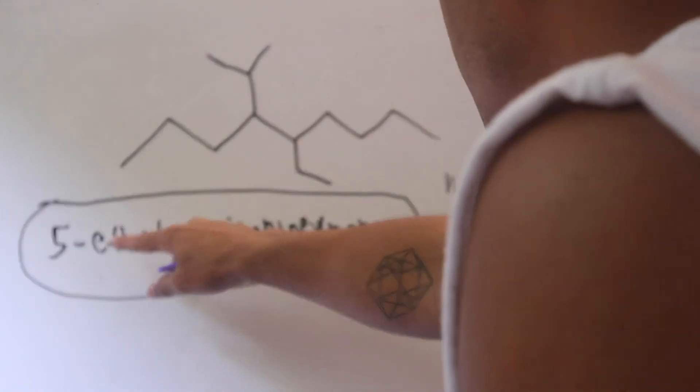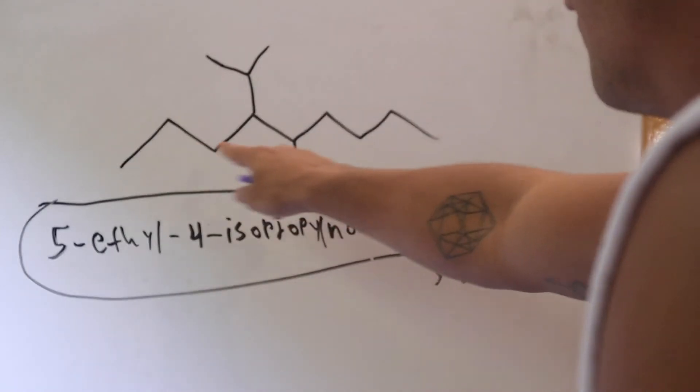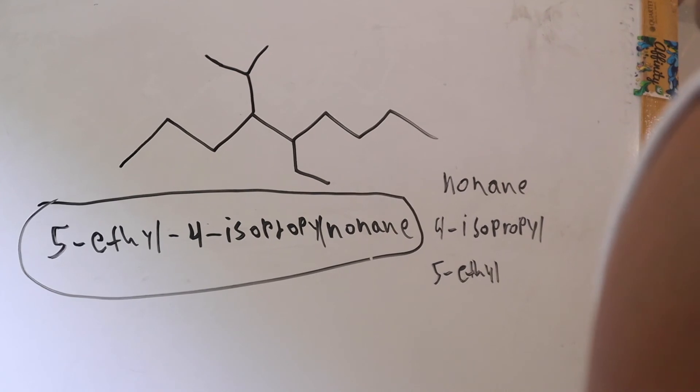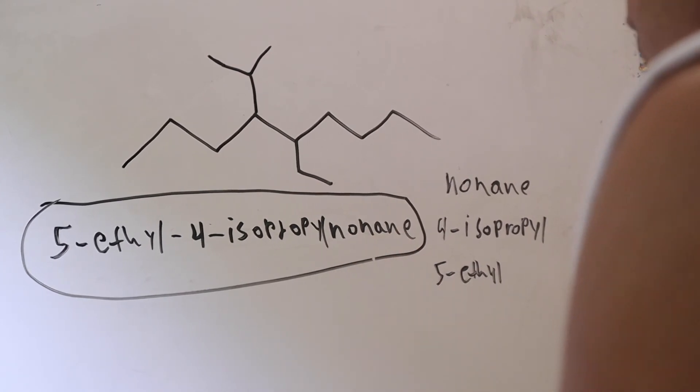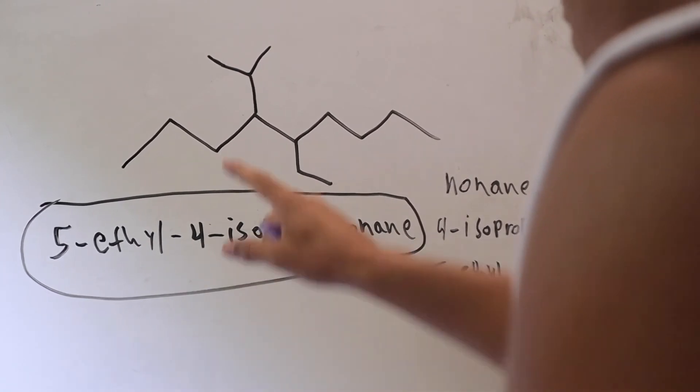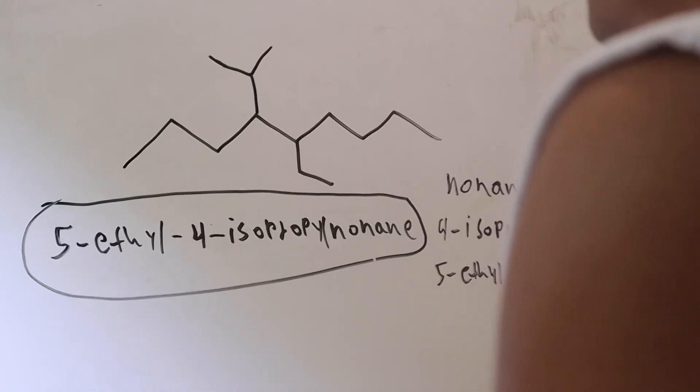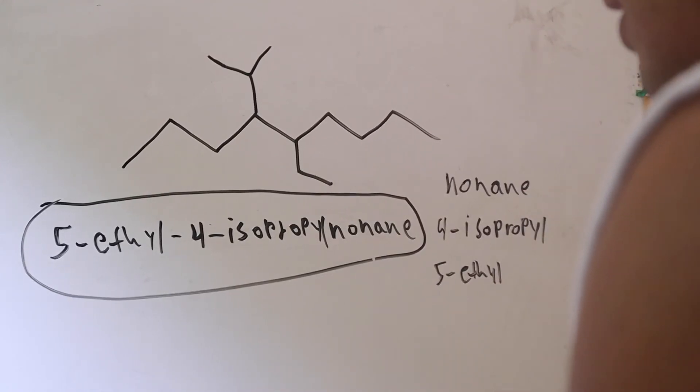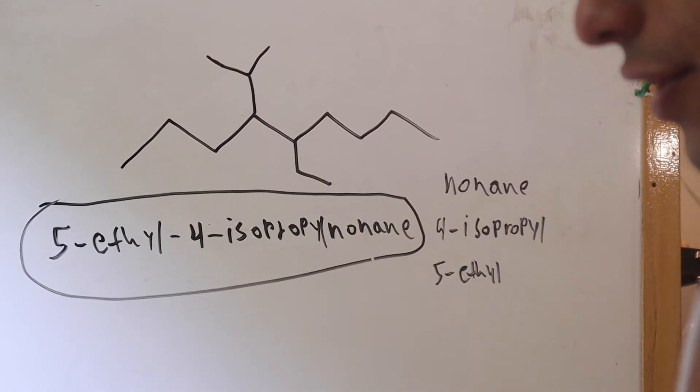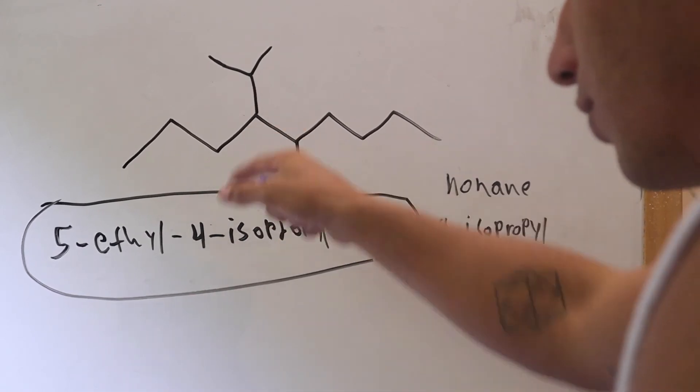And same thing here, you designate, even though 1, 2, 3, 4, 5, even though this ethyl group is on the fifth, no matter what, like I said, you want to designate the first functional group you see with the lowest number from either the right to the left, whatever will give you a lower number to find that first functional group.